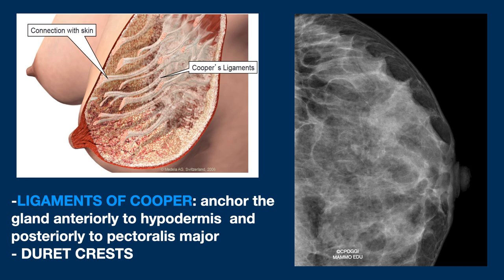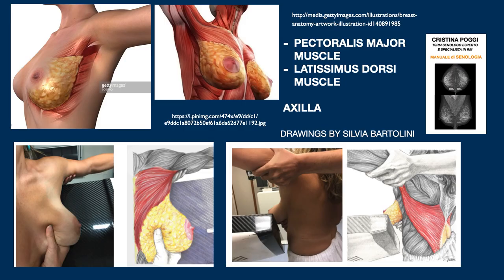The main ligaments have an anterior-posterior course from the epidermis to the pectoralis muscle. Usually the anterior portions, called crural crests, are more visible. We must include the pectoralis muscle and, if possible, also the latissimus dorsi in the MLO projection — both of which I spoke about diffusely in a recent series of lectures. You can find them on this channel.